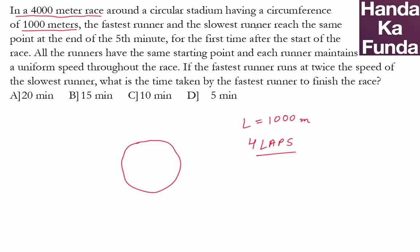Now, the fastest runner and the slowest runner reach the same point at the end of the fifth minute. So let's say the fastest guy and the slowest guy, they started from the starting point at t equal to zero. They'll be running in the same direction. So let's say this is the fastest and this is the slowest guy. And then they will be moving around in a circle.